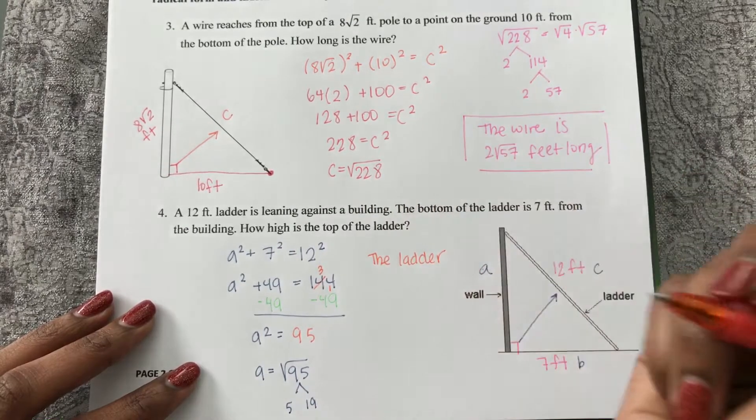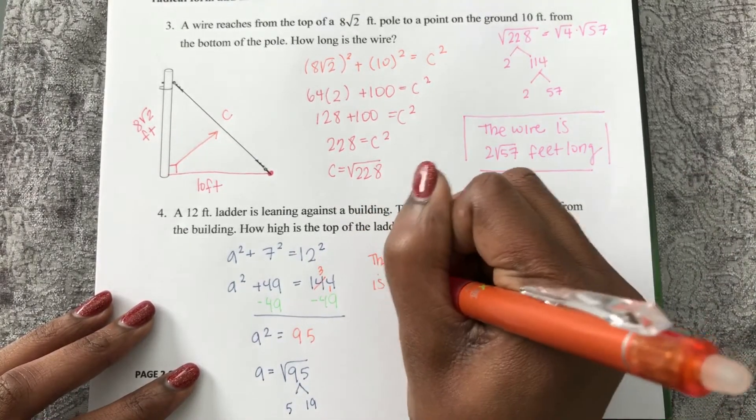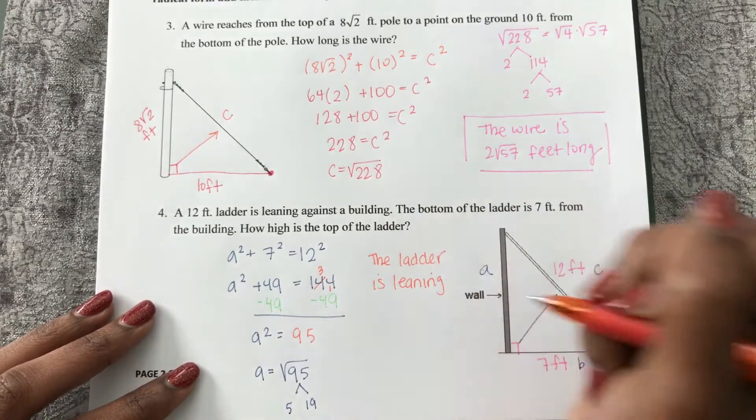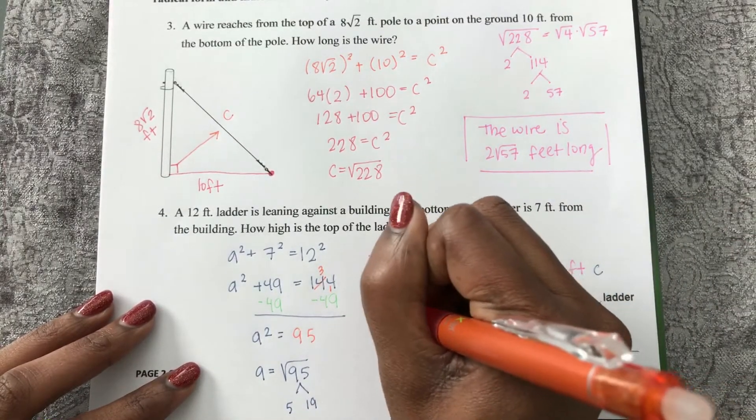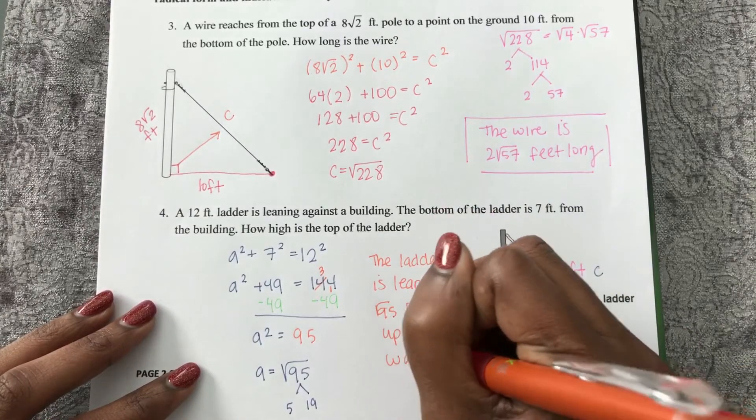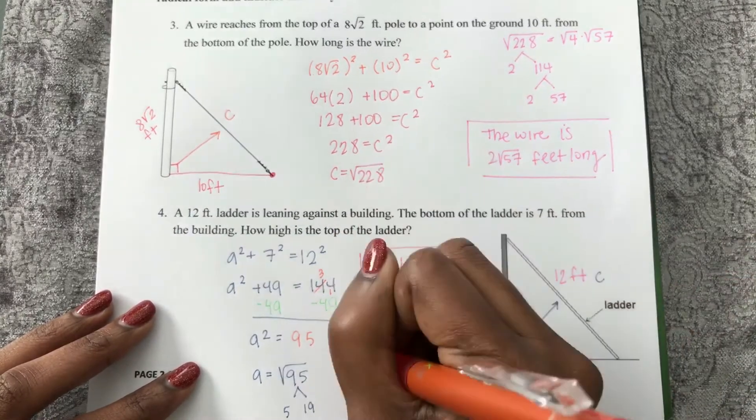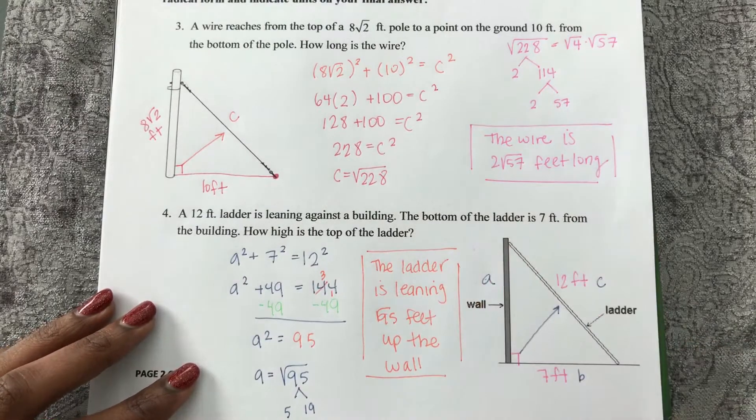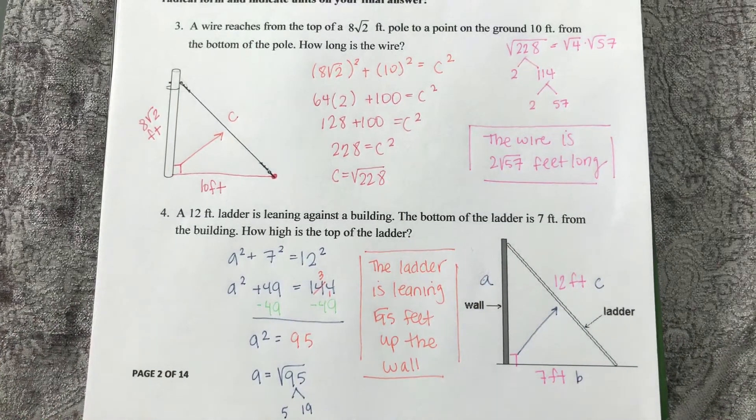the ladder is leaning square root of 95 feet up the wall. So notice for word problems, our answer should be in a sentence.